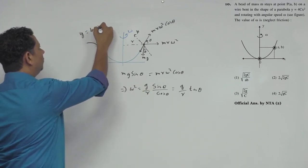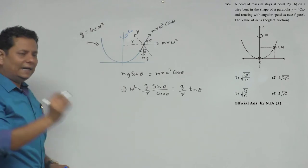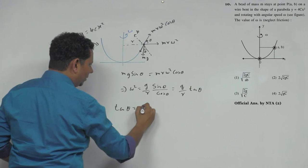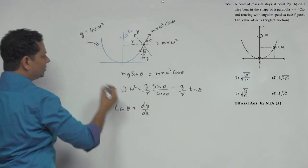The equation y = 4cx² will help us. At any point, tan θ will be equal to dy/dx.